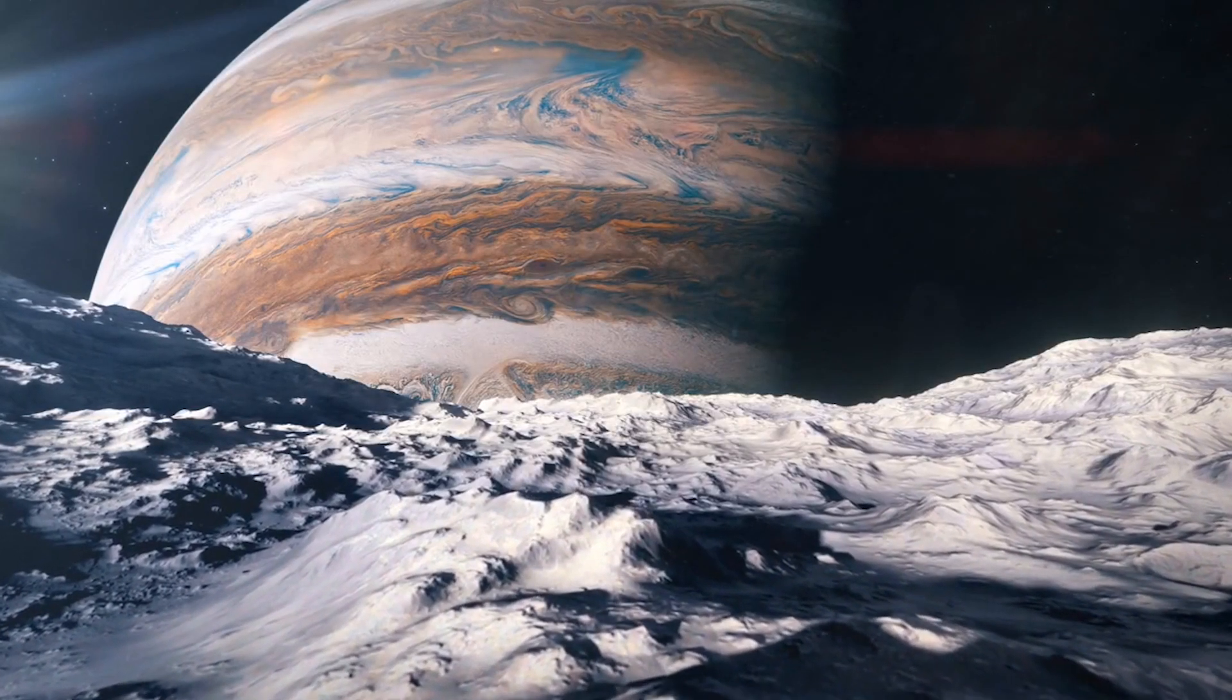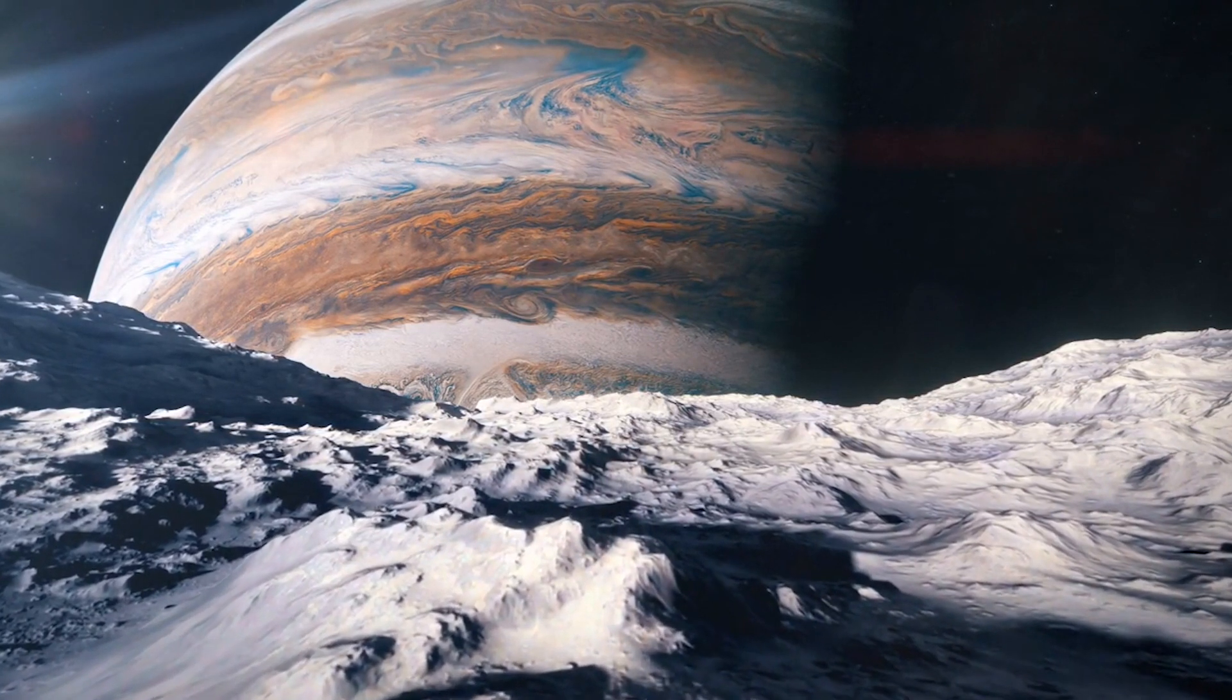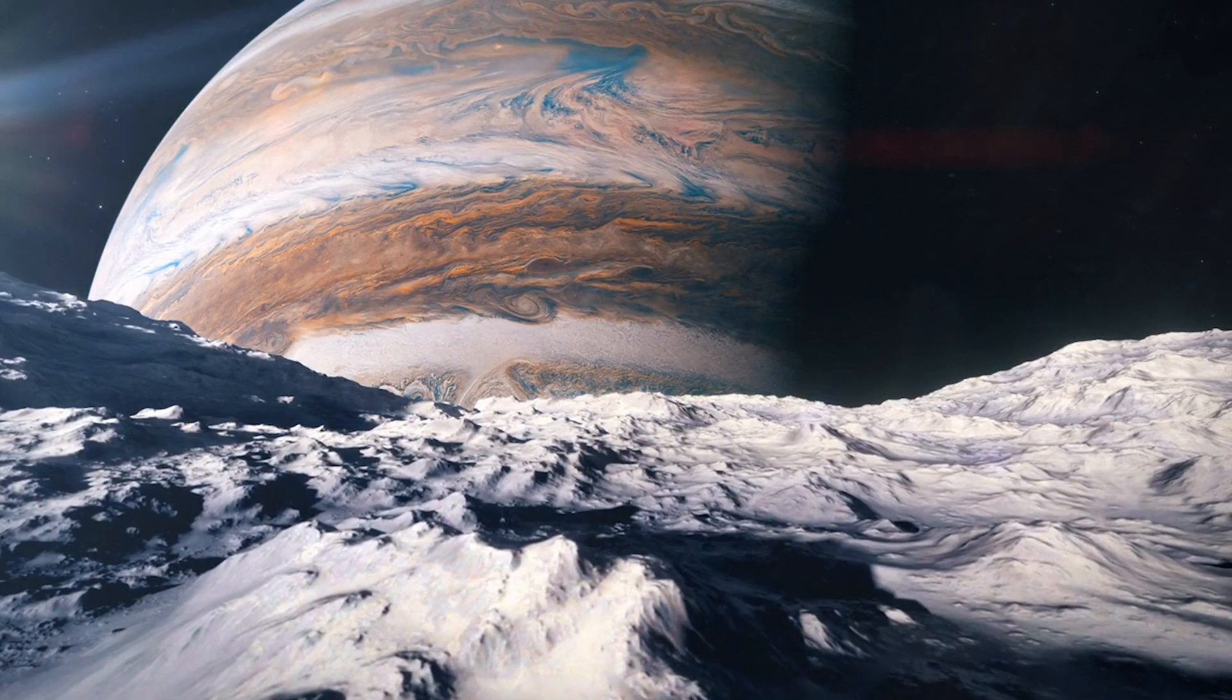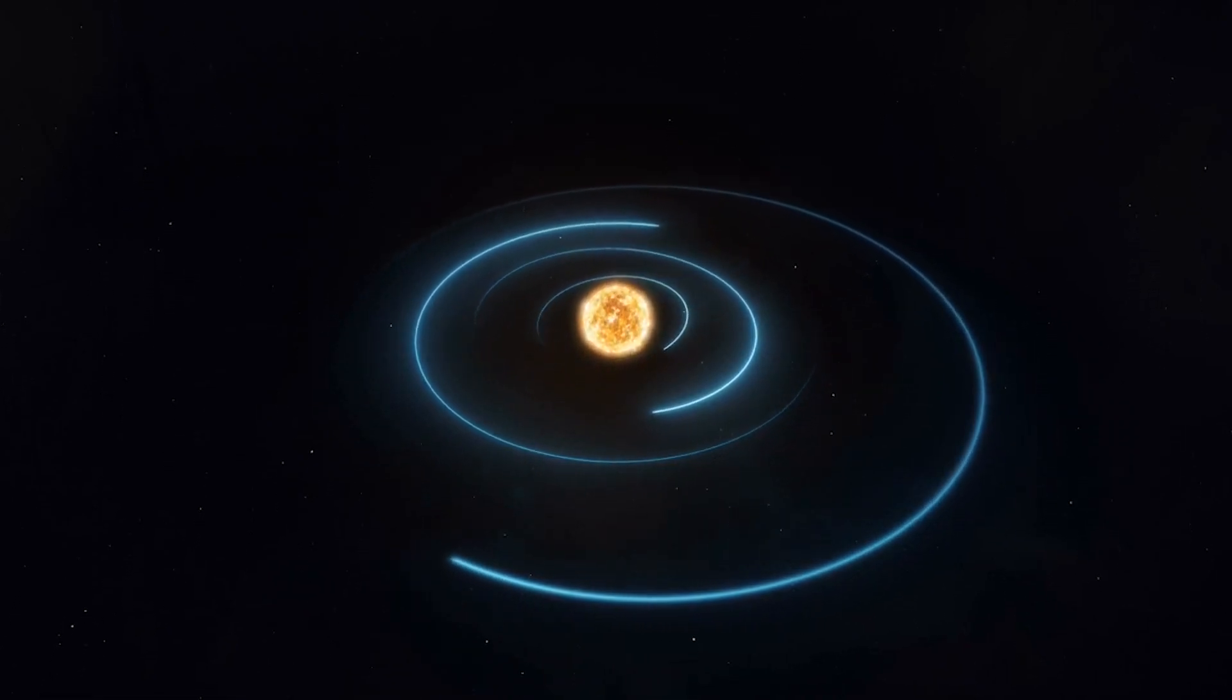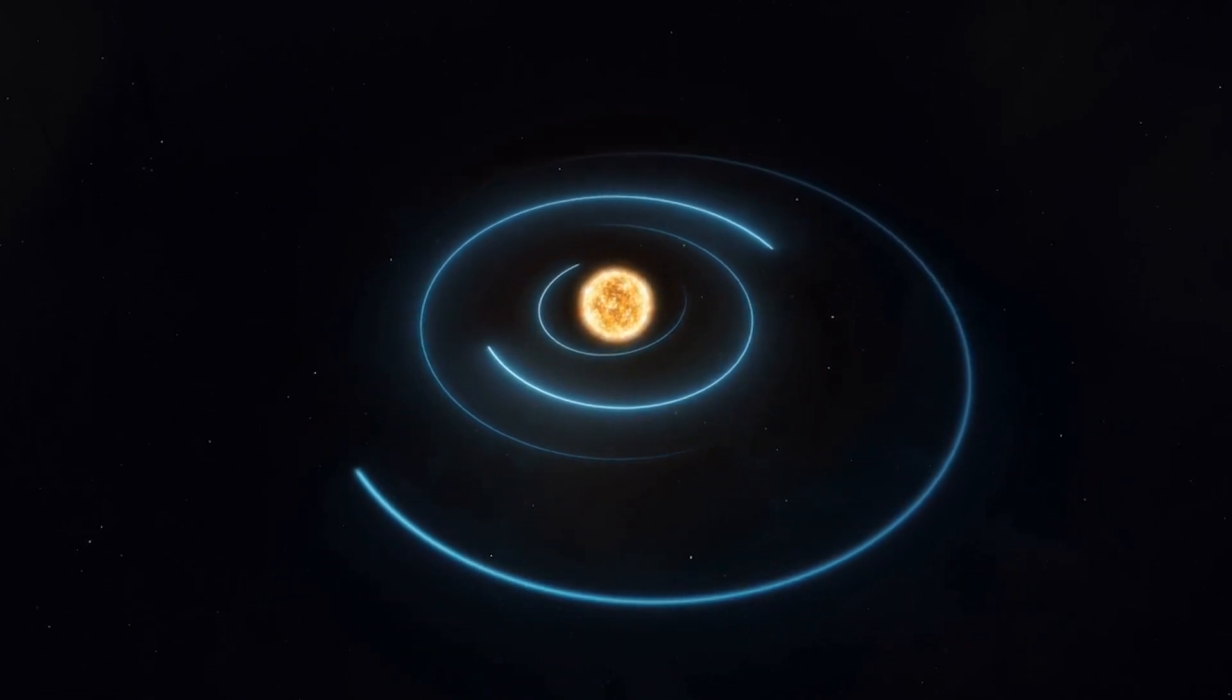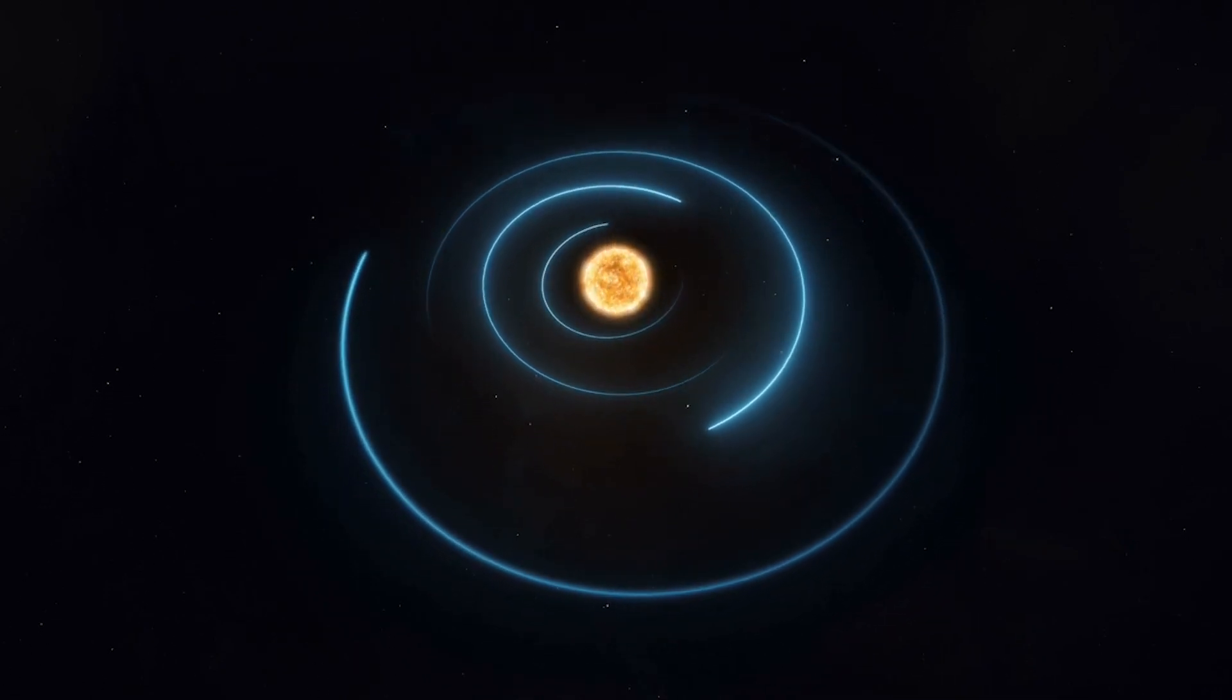NASA showed a transmission spectrum of a hot exoplanet after the deep field picture. WASP-96b is a hot Jupiter with a mass less than half of Jupiter and a diameter 1.2 times Jupiter's. The temperature on this planet reaches 1,000 degrees Fahrenheit or 540 degrees Celsius. The planet circles its star every 3.4 days and is about 1,150 light-years away from Earth.